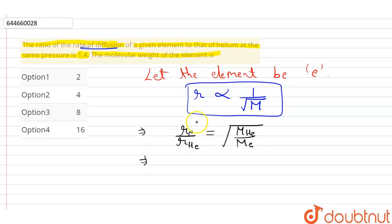So now this ratio is given 1.4 in the question itself, is equals to square root of molar mass of helium is 4, molar mass of the element e we have to find out.